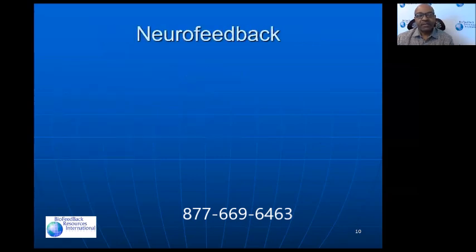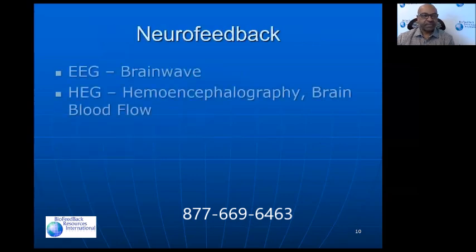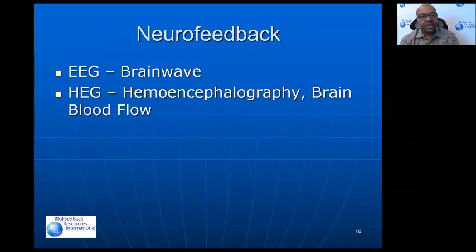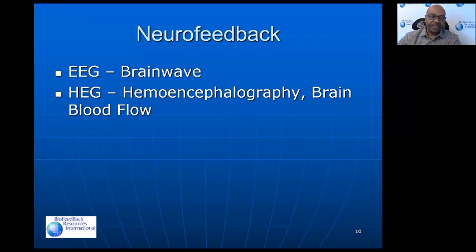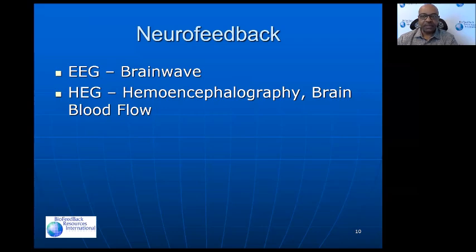When we look at neurofeedback, we think of the brain — measuring activity from the brain. Mostly people think about EEG or brainwave activity, which is electrical activity measured from the brain. We also have something called HEG, hemoencephalography, which is related to changes in temperature affected by blood flow in the brain. When there's more activation, it changes blood flow, which also changes temperature.